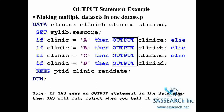Here we have an example of creating multiple datasets in one data step. In our DATA statement, we list four different temporary datasets: Clinic A, Clinic B, Clinic C, and Clinic D. We bring in the permanent SAS dataset SES score. Our statements say that if Clinic equals A, then output to Clinic A; if the observation is from Clinic B, output to Clinic B, and so forth. We are creating four different temporary SAS datasets.